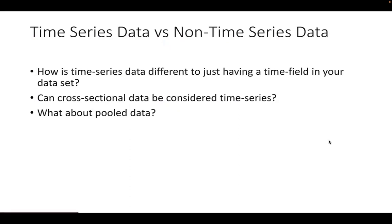You might be asking how time series data is different from non-time series data. If we have time series data that has a time field, does that just automatically make it time series data? What about cross-sectional data — can that be considered time series? What about pooled data? These questions can be answered by looking at how your data has been collected, as this affects how we can then analyze changes over time. I use the word 'changes' as it's a really key concept in understanding time series data. The major difference is that in time series data, the time factor is the dependent component, and for non-time series data, this isn't typically a central theme.